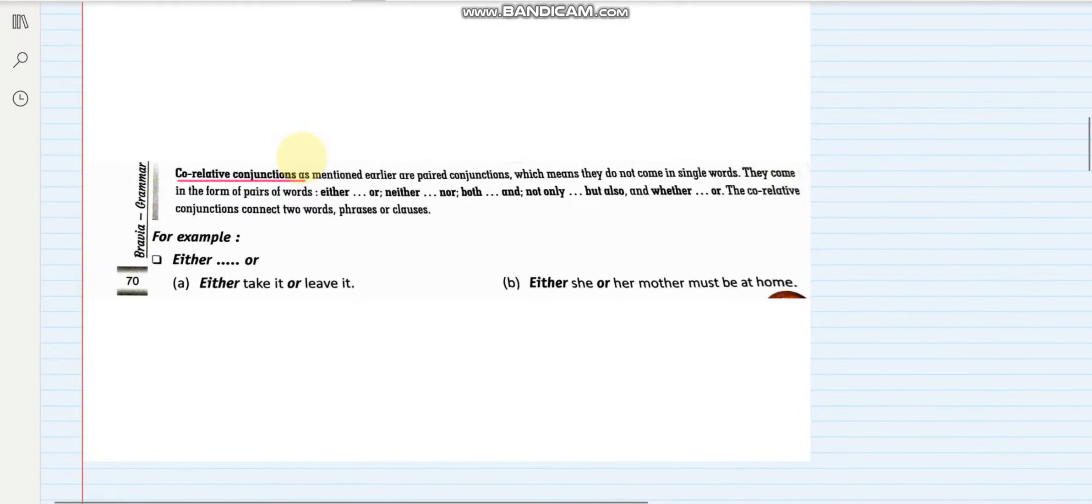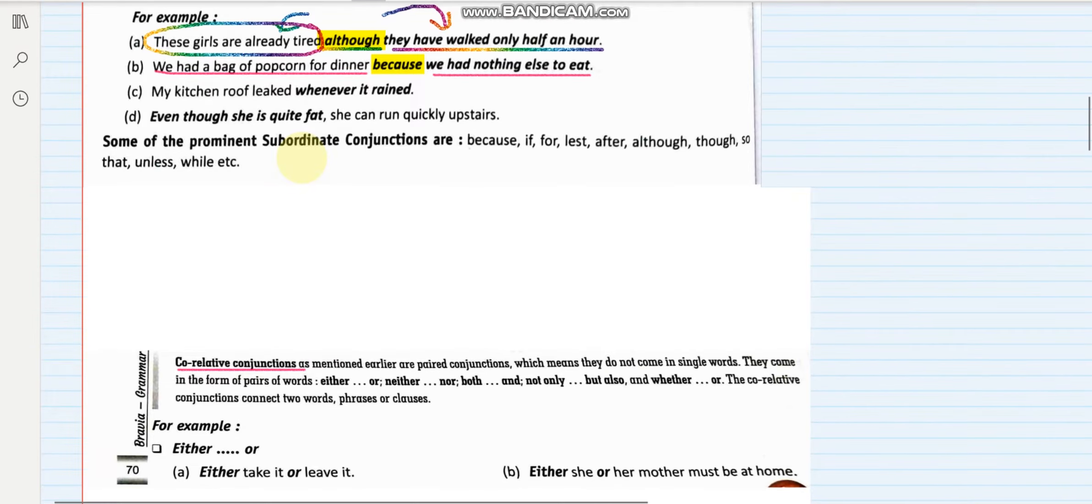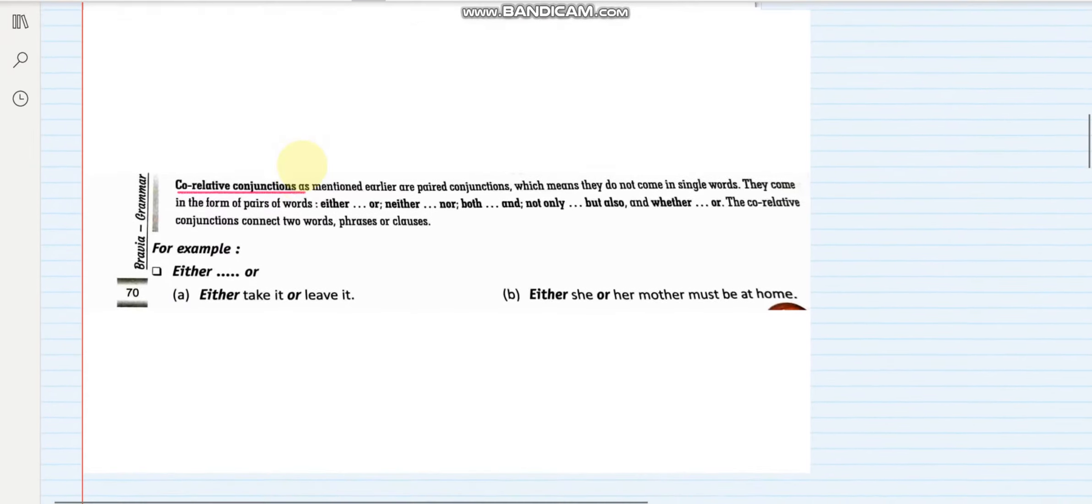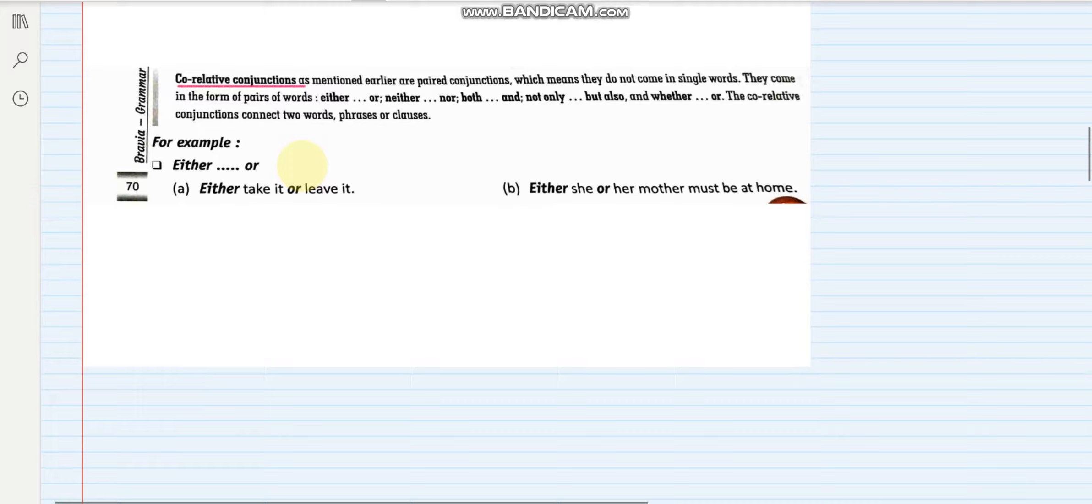Now these are paired conjunctions. What do you mean by paired conjunctions? Paired means they always come with two or three, like either/or, neither/nor, both/and, not only/but also, whether/or. So these are called correlative conjunctions.